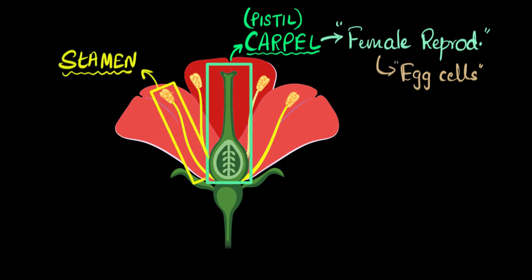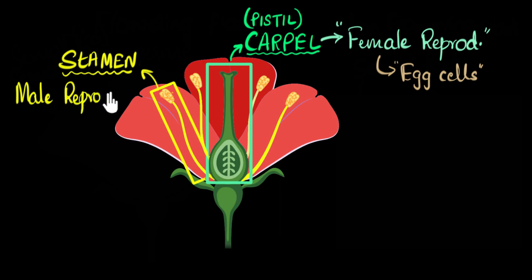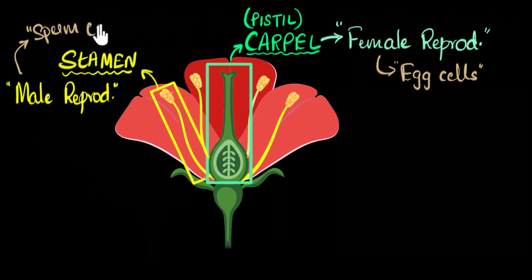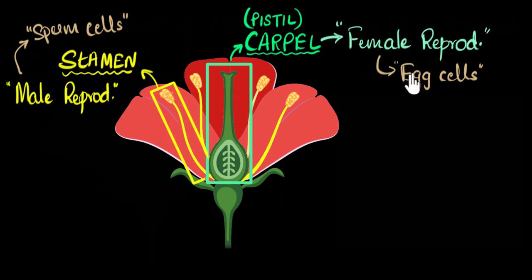The next part is the stamen. We have four stamens in our flower, and they are the male reproductive part. The stamen is where the sperm cells are made — just like in animals, the reproductive part that creates sperm cells is called the male reproductive part. The whole idea behind sexual reproduction is that sperm cells need to fuse with egg cells, but we'll cover that in future videos.